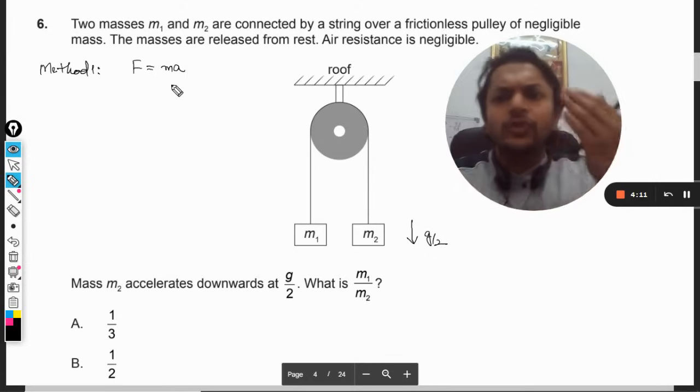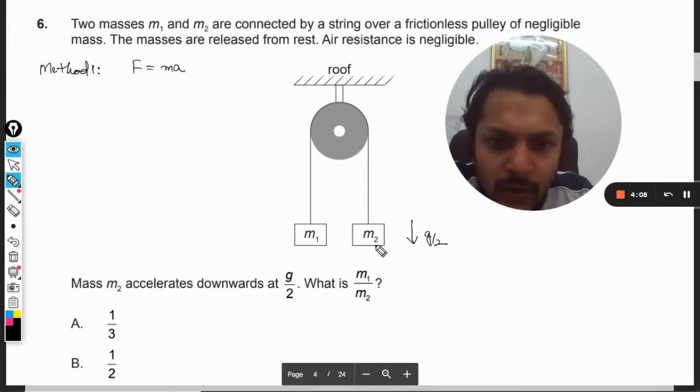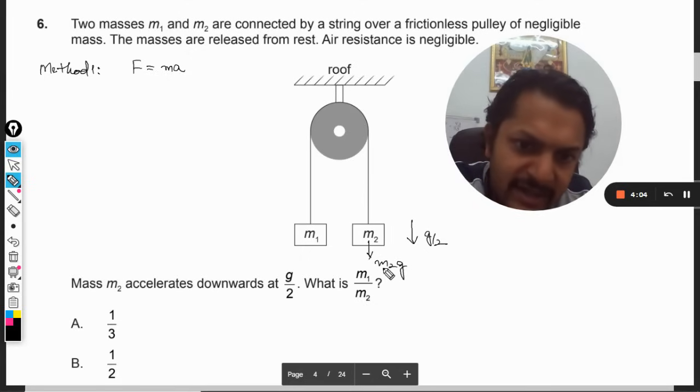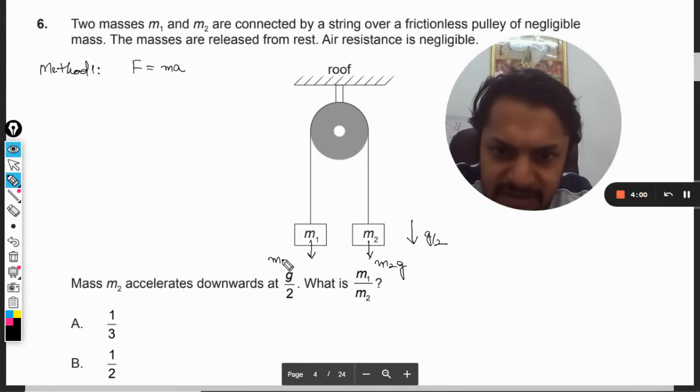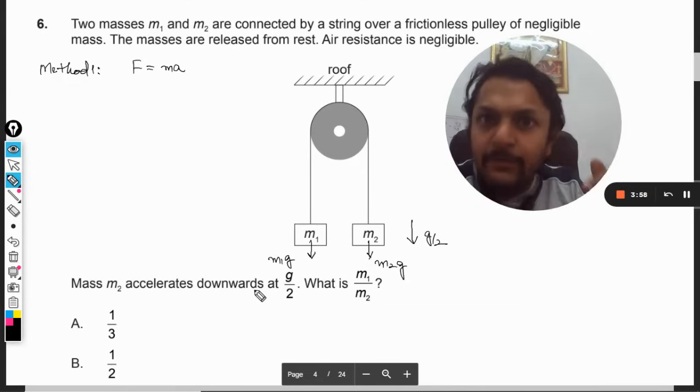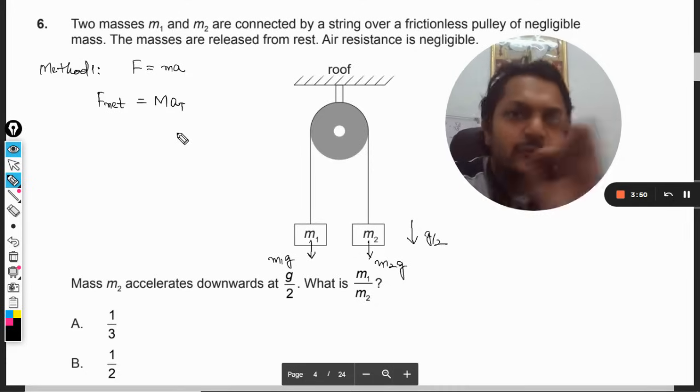There is motion taking place here, and Newton is never wrong. So the total force equals the total mass into total acceleration. What is the total force now? This mass is acted upon by a force m2g, and this mass is acted upon by a force m1g.